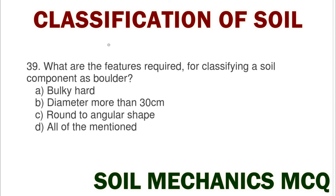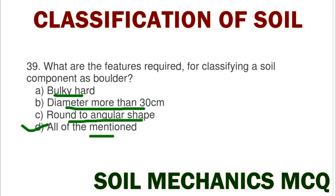Next question: what are the features required for classifying a soil component as a boulder? Option A bulky hard, option B diameter more than 30 cm, option C rounded to angular shape, option D all of mentioned. The correct answer is all of mentioned.